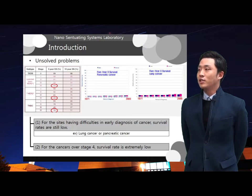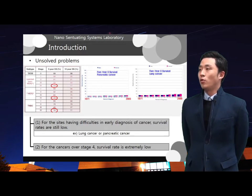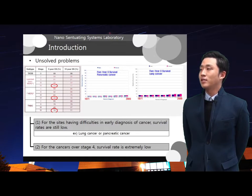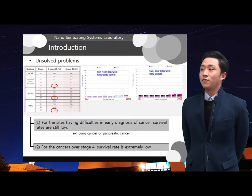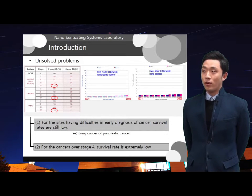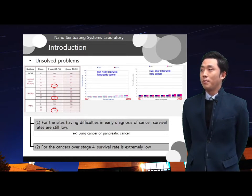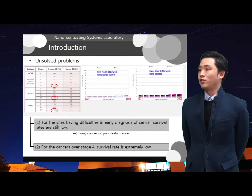As you can see in the graphs, survival rates remained lower than 10% for the past 30 years. For cancers over stage 4, survival rates decreased dramatically. Therefore, current therapeutic drugs are not appropriate, as well as cancer therapy for targeting the universality of cancer nature.